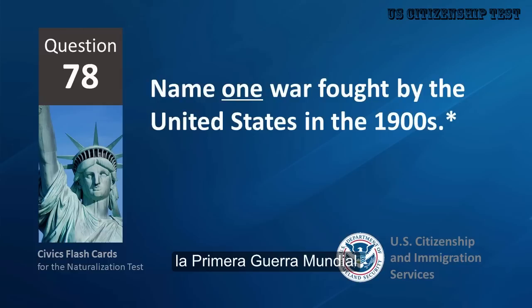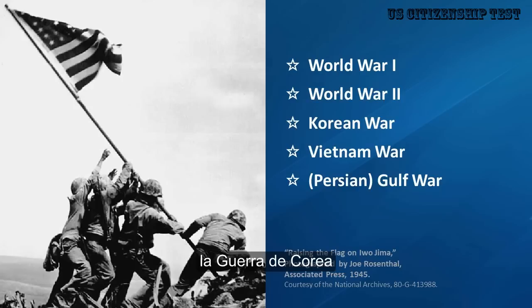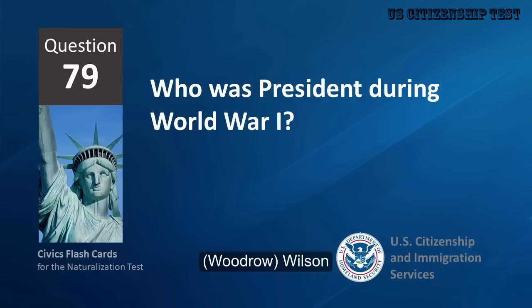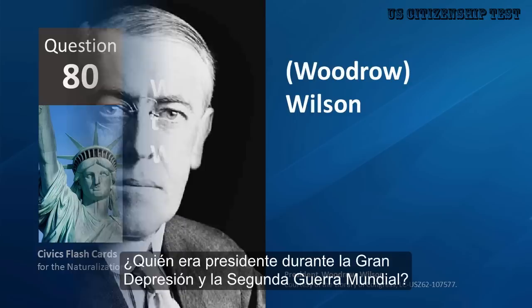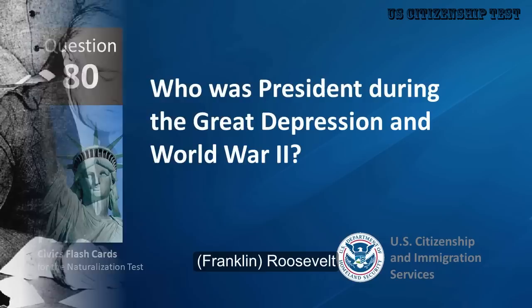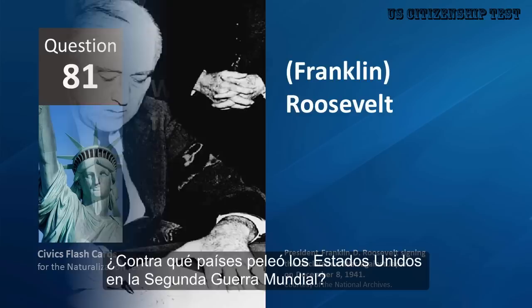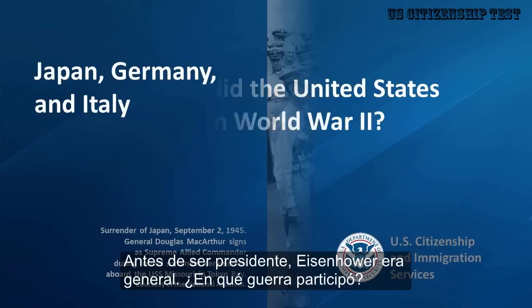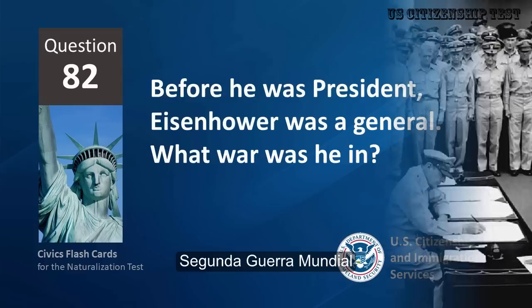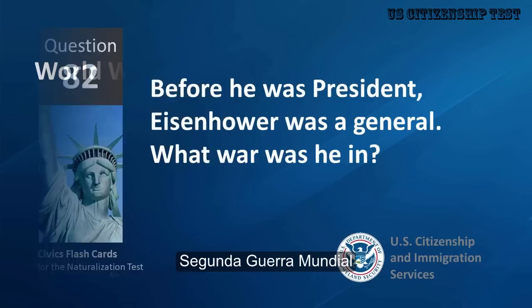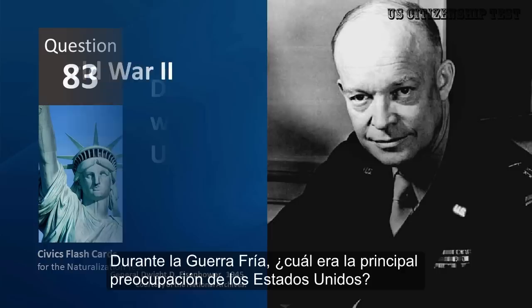Name one war fought by the United States in the 1900s. World War I, World War II, Korean War, Vietnam War, Persian Gulf War. Who was President during World War I? Woodrow Wilson. Who was President during the Great Depression and World War II? Franklin Roosevelt. Who did the United States fight in World War II? Japan, Germany, and Italy. Before he was President, Eisenhower was a General. What war was he in? World War II.